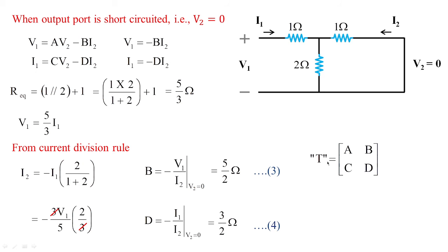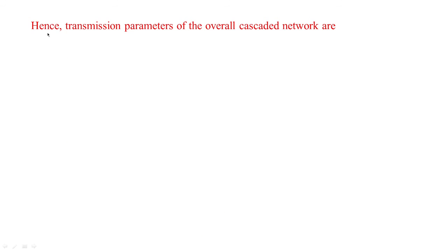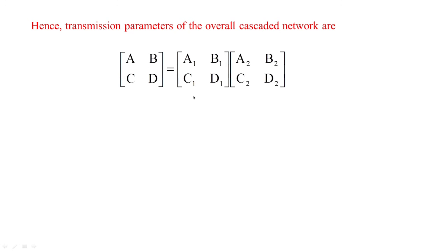Overall, the transmission line parameters are obtained as ABCD: A equals 11/4, B equals 5/2, C equals 5/4, and D equals 3/2. Now our actual requirement is the cascade connection of the given circuit. Since the same circuit is repeated, the transmission line parameters for the overall cascade network are obtained using the formula ABCD equals [A1,B1;C1,D1] times [A2,B2;C2,D2], with the values 11/4, 5/2, 5/4, and 3/2.